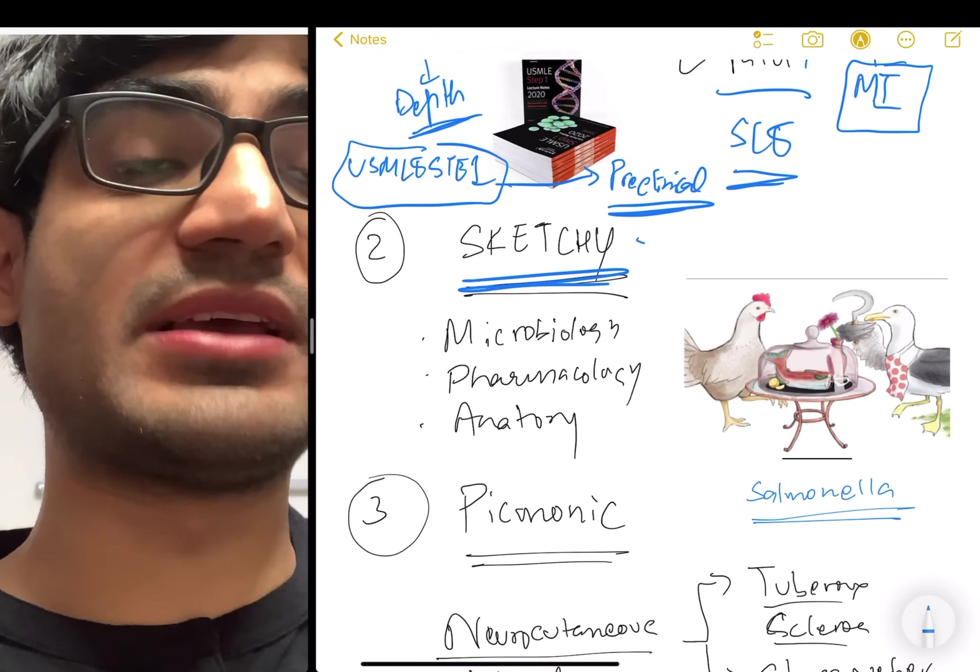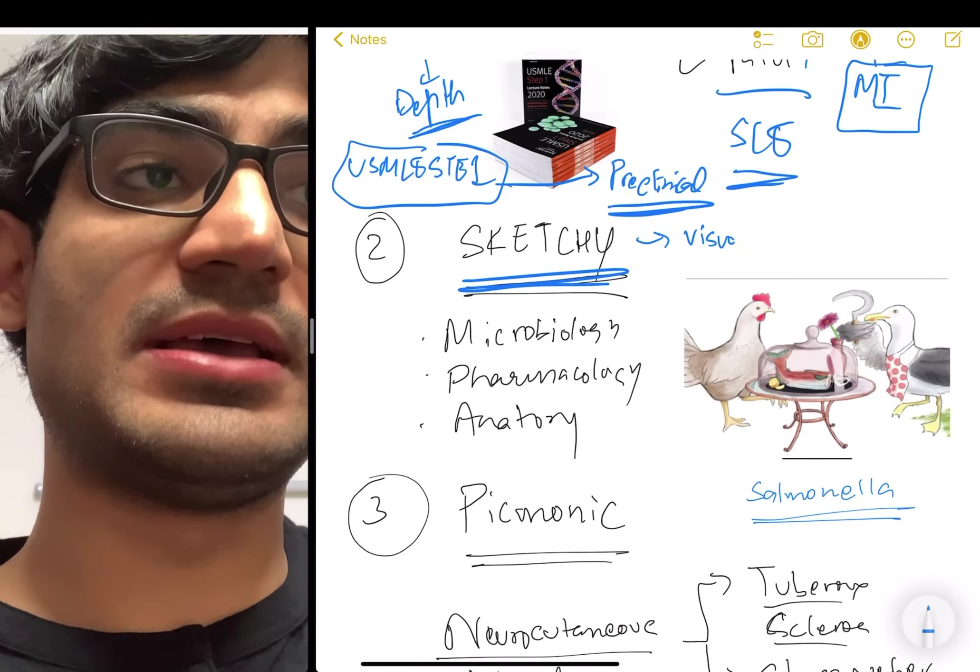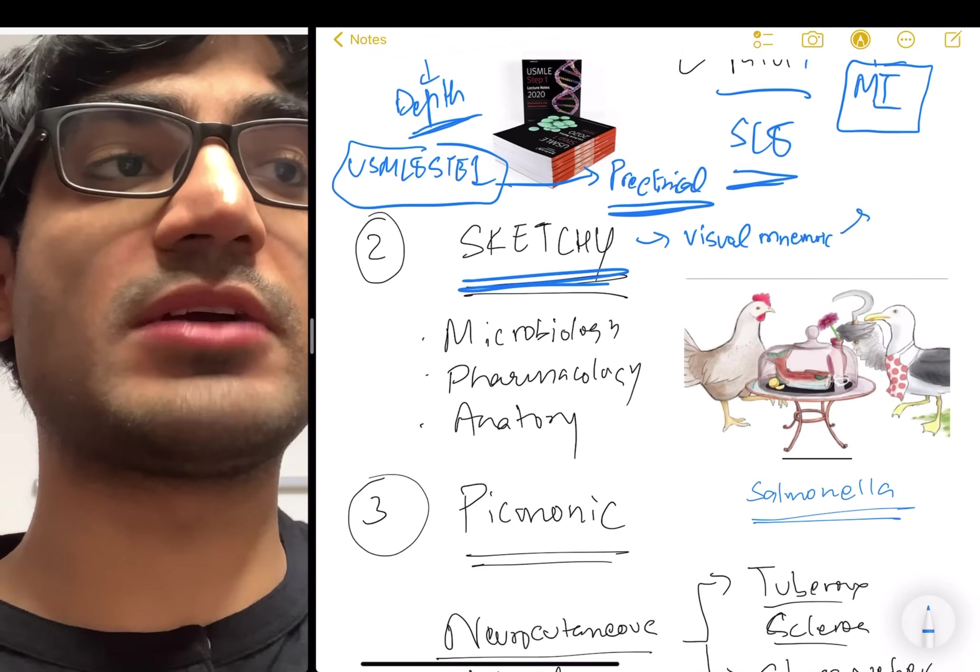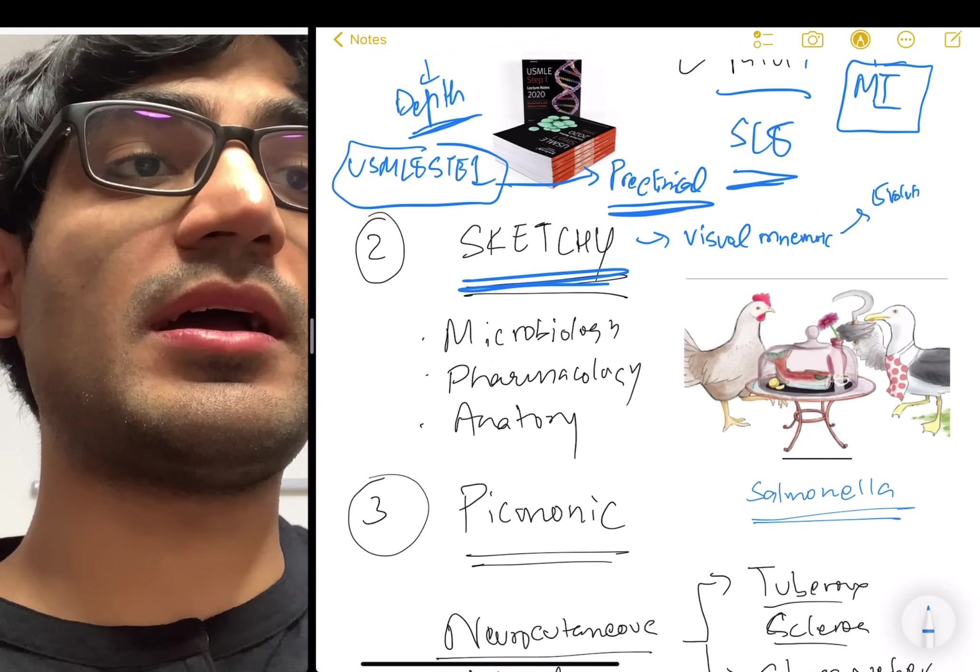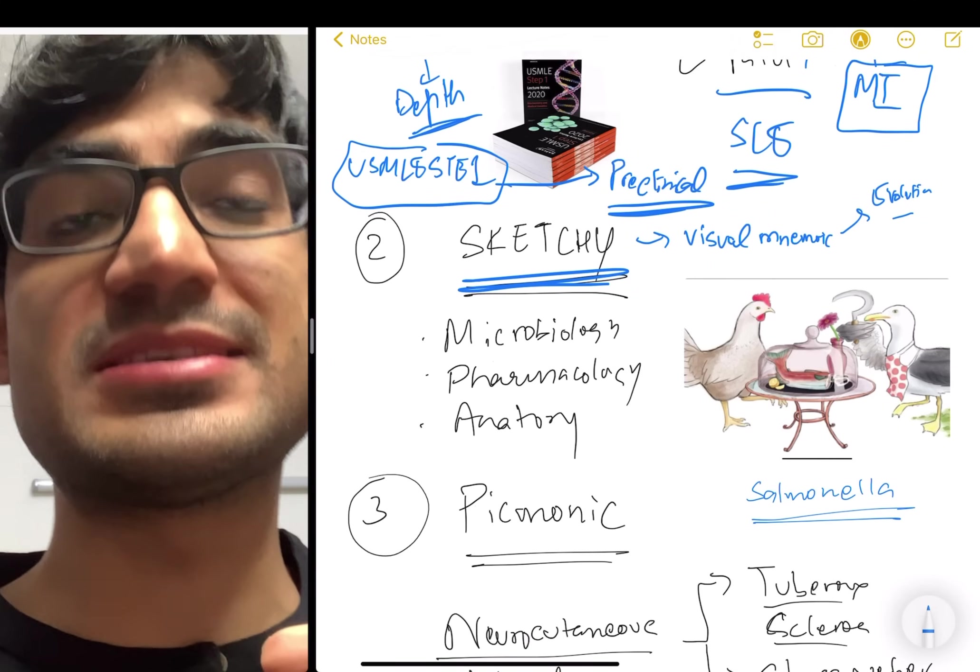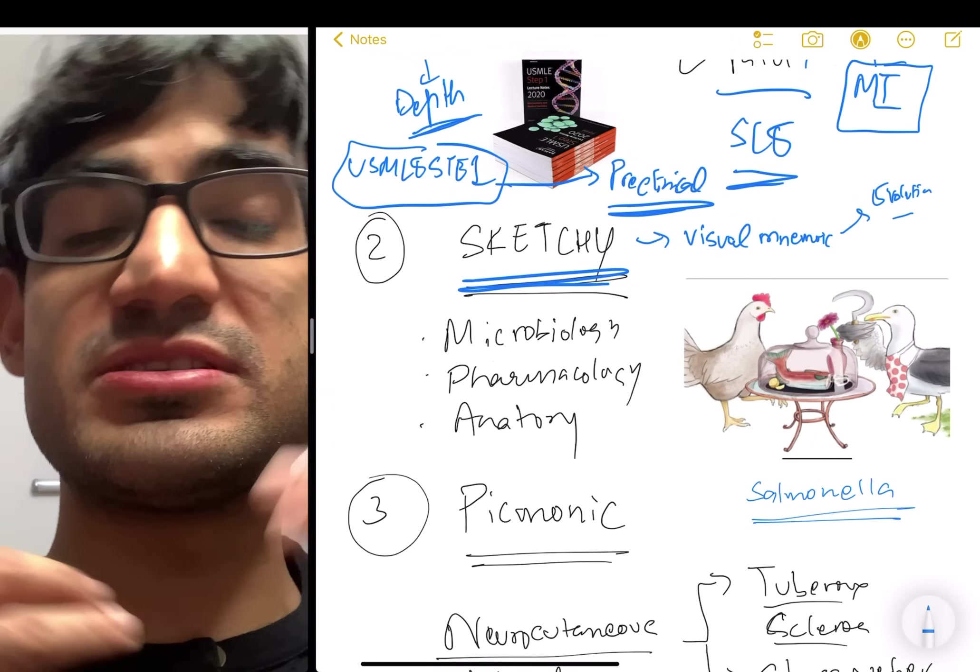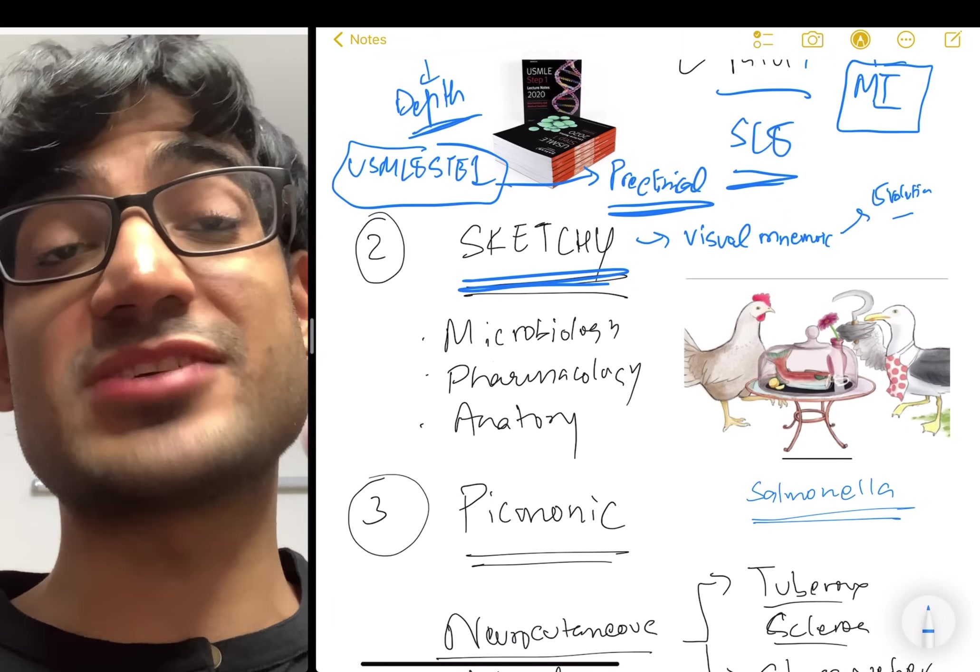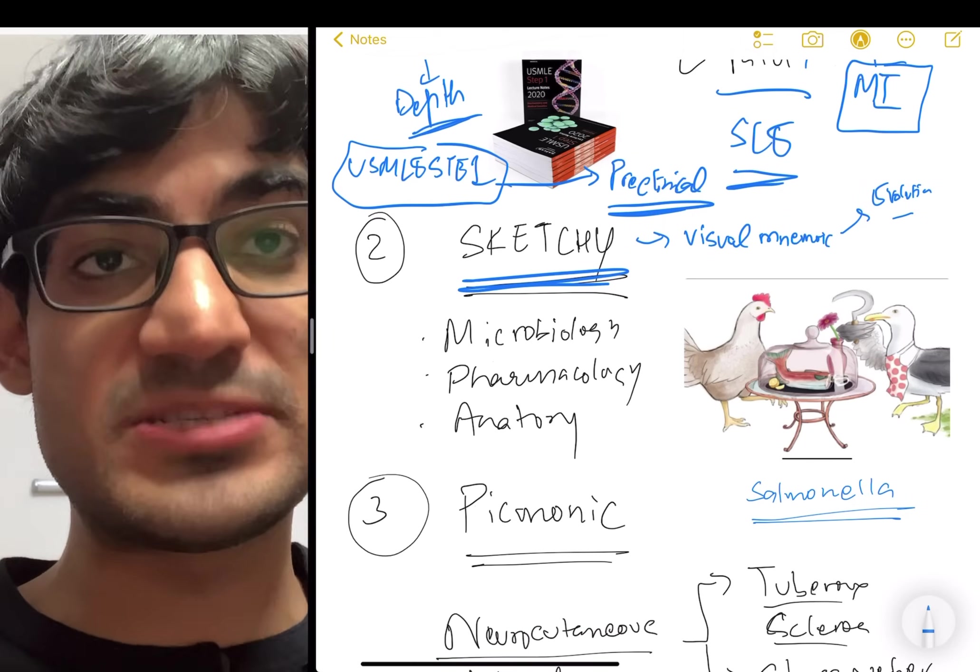The second thing I recommend everyone do for NEET PG and USMLE is Sketchy. So what is Sketchy? Sketchy is basically visual mnemonics. And the way this thing really works is through evolutionary psychology. We are actually meant to remember pictures and not words or numbers.